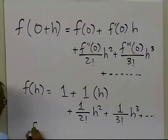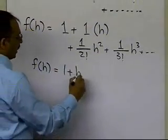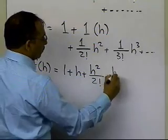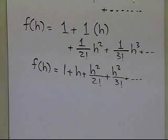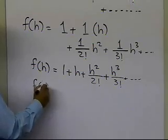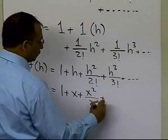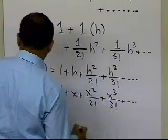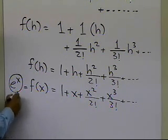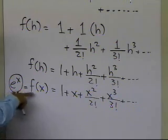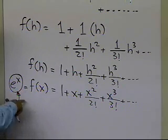From here, if I want to calculate the value of the function at h, it is 1 plus h plus h squared over factorial 2 plus h cubed over factorial 3, and so on. Since h is just a dummy variable, I can rename it x, giving 1 plus x plus x squared over factorial 2 plus x cubed over factorial 3, and so on. But f of x is e to the power of x, because that's what we chose. So that's the derivation of the Maclaurin series for e to the power of x using Taylor's theorem.